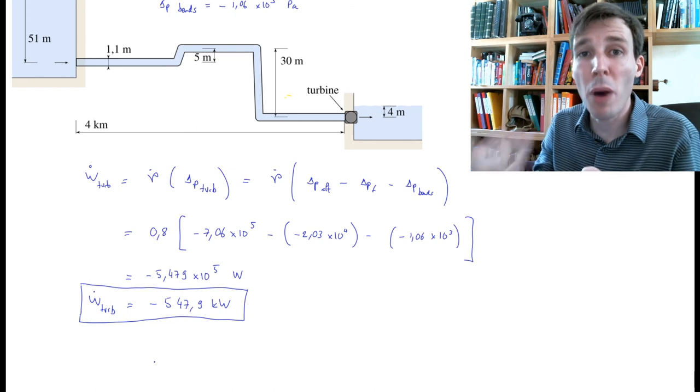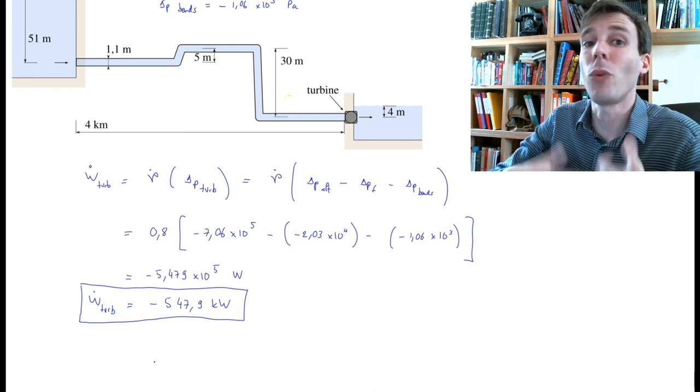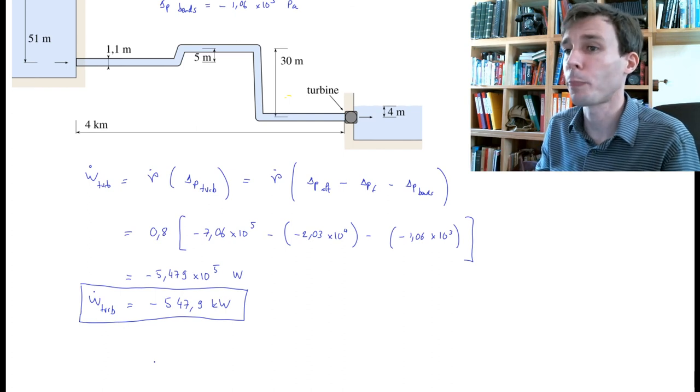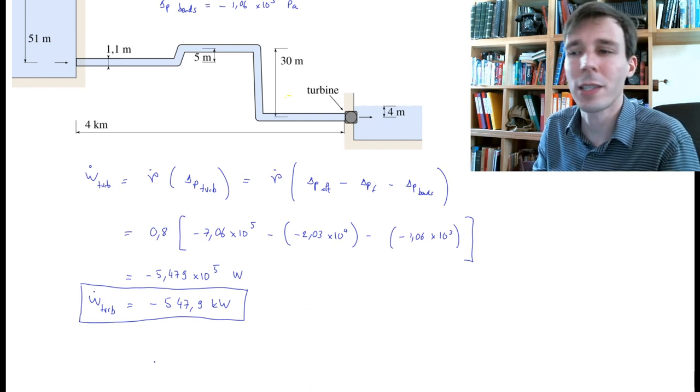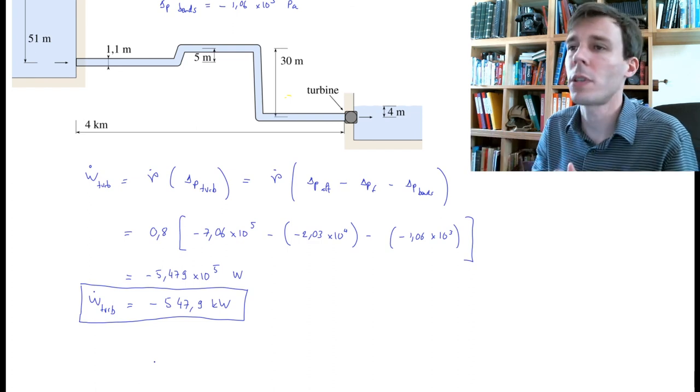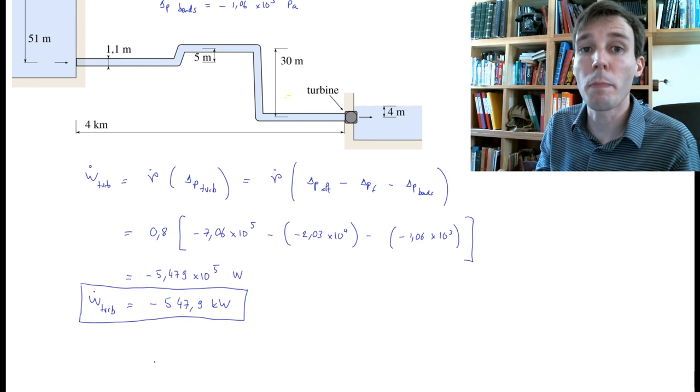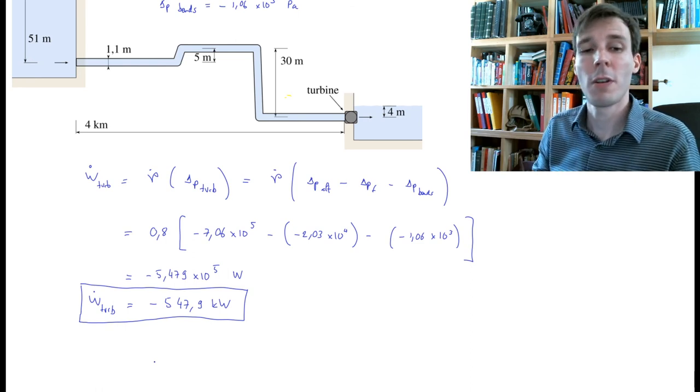If this power was positive, it would mean this is not a turbine at all; it is a pump. We have to add power to the water. So here we are—this is how you add up the different pressure differences inside a pipe system to compute the pumping or turbine power that is available.